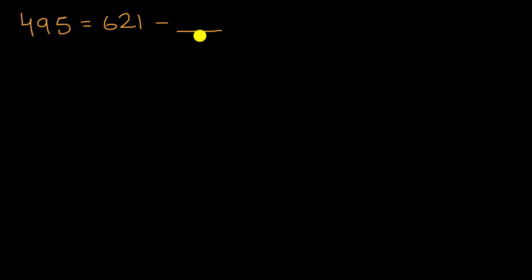Okay, now let's do this together. One technique is to try to visualize this on a number line. 495 is what you get when you subtract something from 621. So let me put those two numbers on a number line.